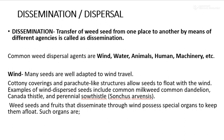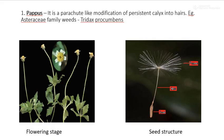Weed seeds and fruits that disseminate through wind possess special organs to keep them afloat, such as pappus and comos structures. The pappus is a parachute-like modification of the persistent calyx. An example is Tridax procumbens. The first picture in this slide shows the flowering stage of Tridax procumbens, and the second picture shows the pappus seed structure.